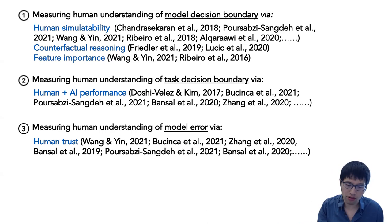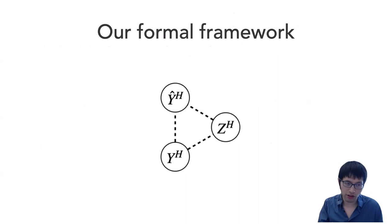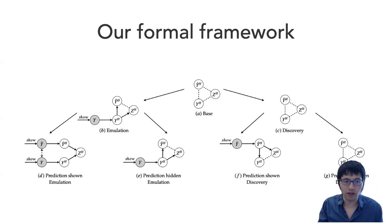Building on these three concepts, we've also built a formal framework to describe the interaction between explanations and human understanding. Here is a simplified version of our framework. We are concerned with these three variables: Y-hat H refers to human understanding of model prediction for a particular instance, capital Y H refers to human understanding of the actual label, and Z H represents human understanding of model error. We introduced this framework to describe how the relation can change under different conditions.